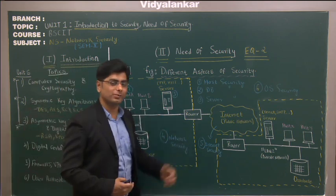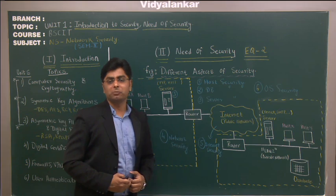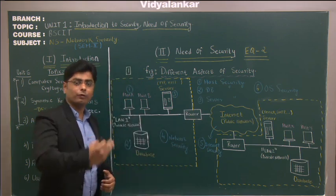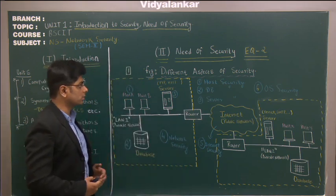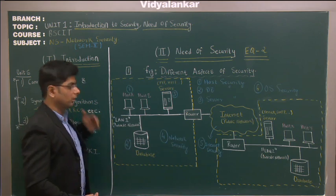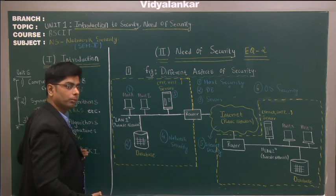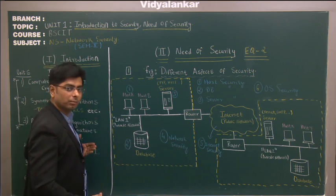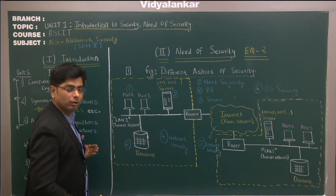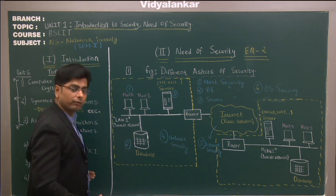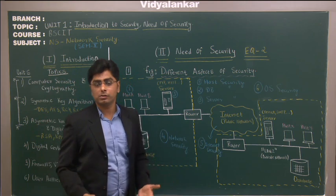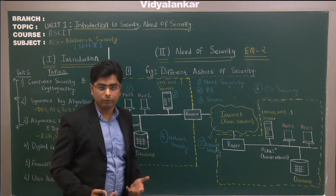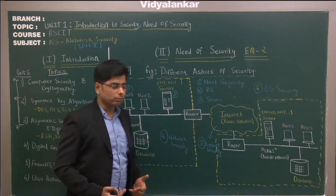To be honest, the name of the subject should have been 'Cryptography and Network Security' instead of just 'Network Security.' The reason is straightforward — three units cover the major part of cryptography, and the remaining three cover the applications of cryptography, such as digital certificates and more.